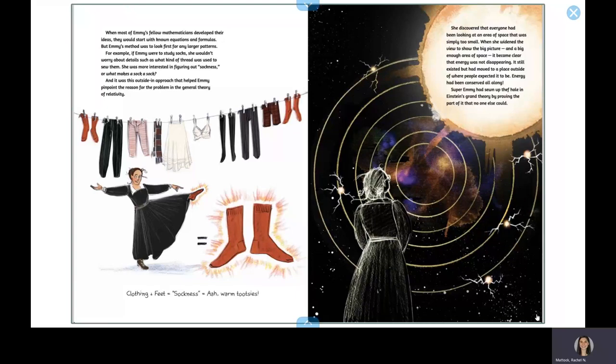And it was this outside-in approach that helped Emmy pinpoint the reason for the problem in the general theory of relativity. She discovered that everyone had been looking at an area of space that was simply too small. When she widened the view to show the big picture and a big enough area of space, it became clear that energy was not disappearing. It still existed, but had moved to a place outside of where people expected it to be. Energy had been conserved all along.